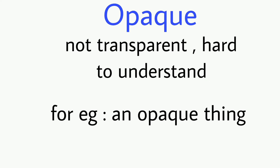Guys, next word is 'opaque.' Iska matlab hota hai not transparent, hard to understand. Yaini koi chiz jo transparent nahi hai, clear nahi hai, samajhne mein difficult hai, use aap keh sakte hain opaque. For example: 'an opaque thing.'